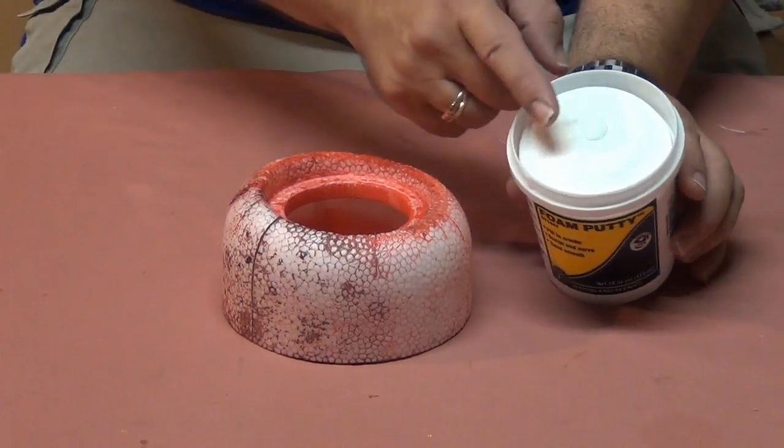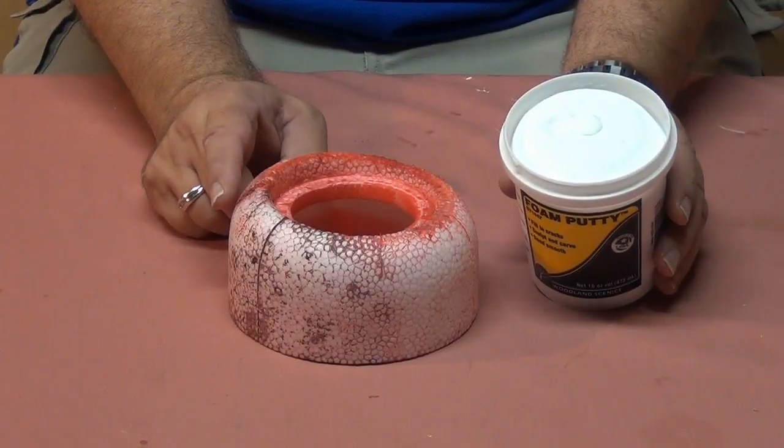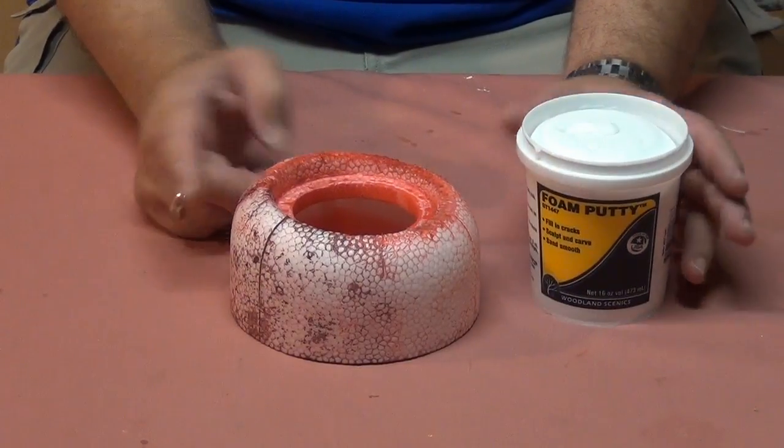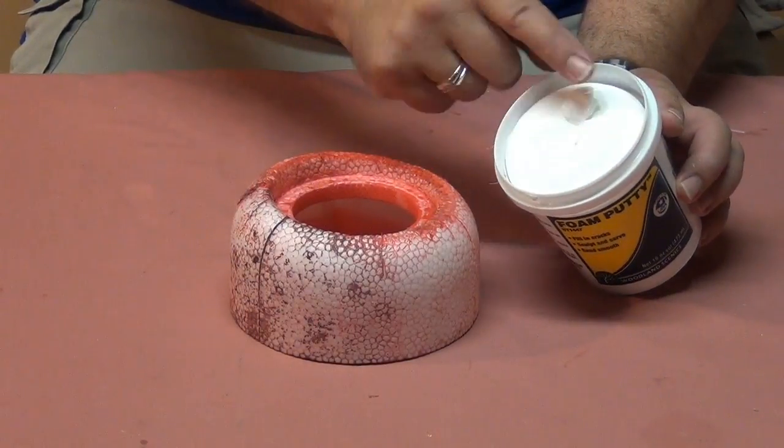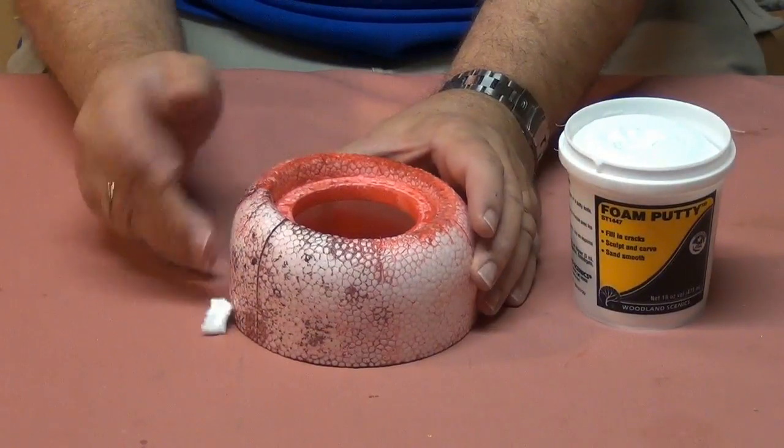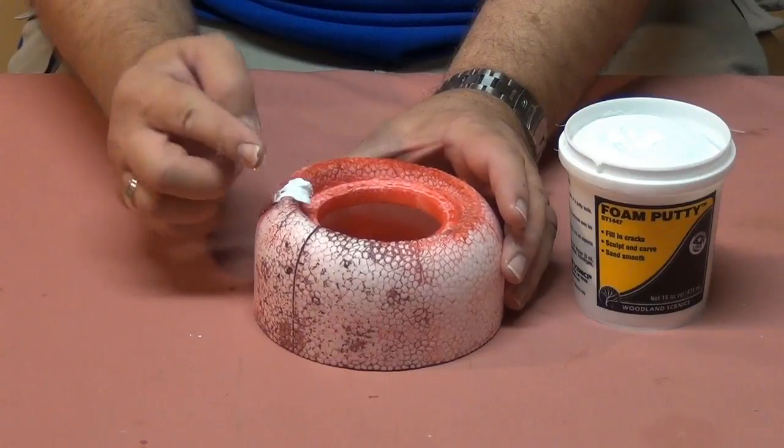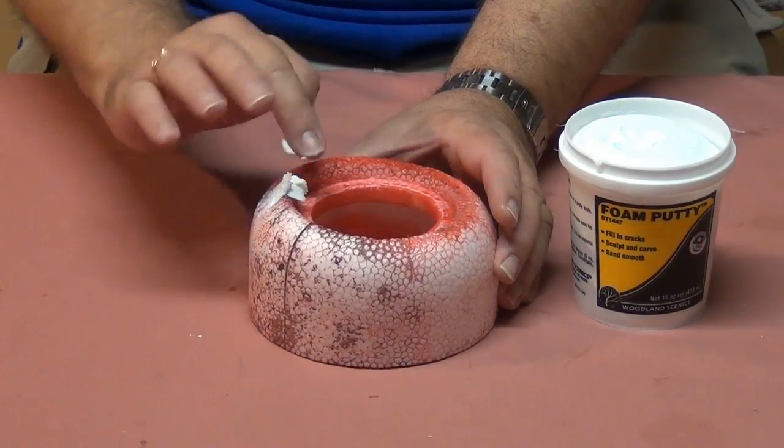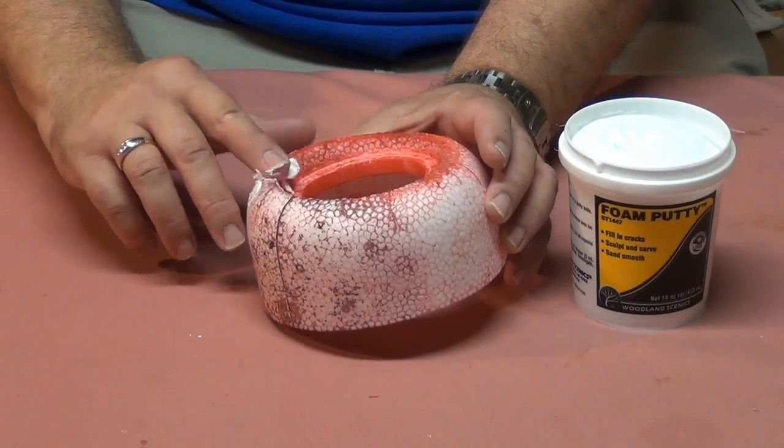As I have it open I can see it's pretty much like the lightweight filler I have in the other container. It's easy to use. Just pull some out with your finger and work it into those areas where there's some smoothing or reshaping needed.